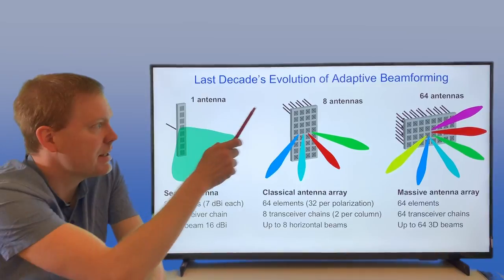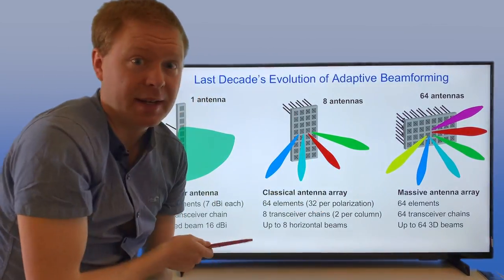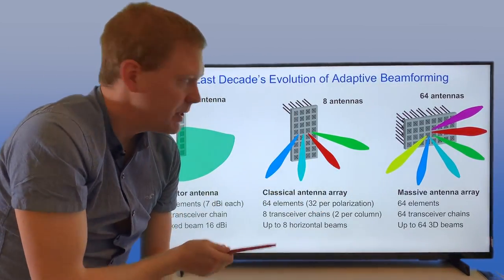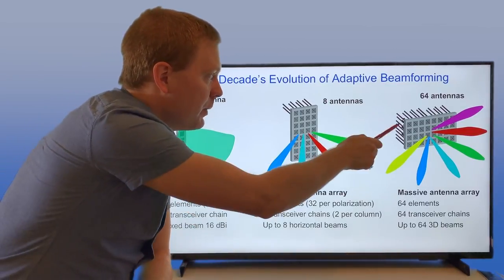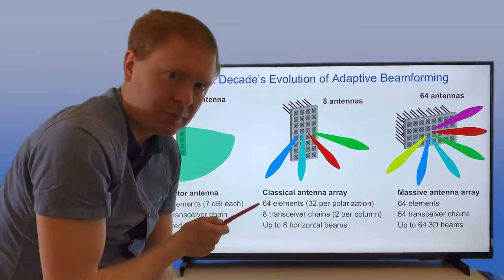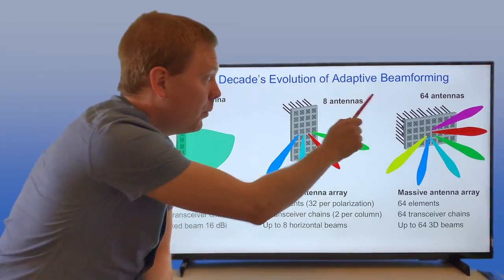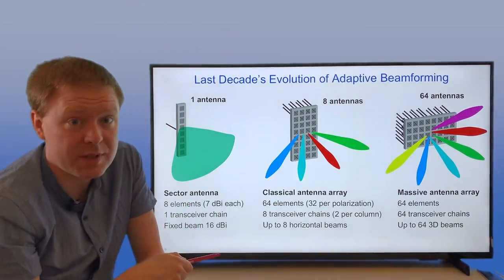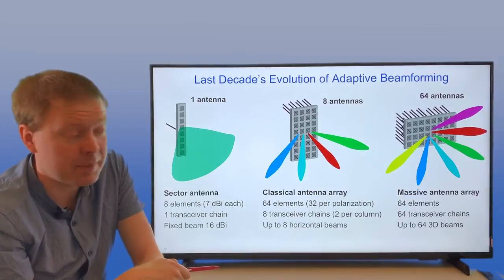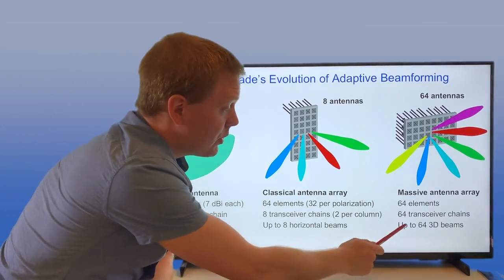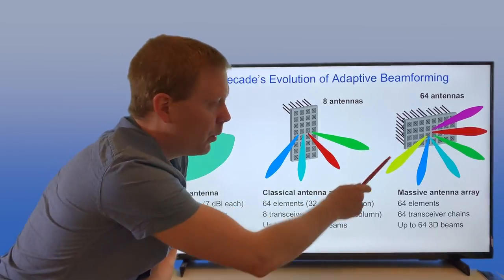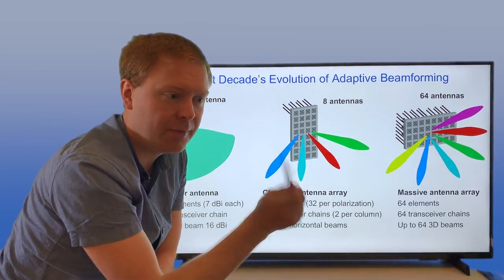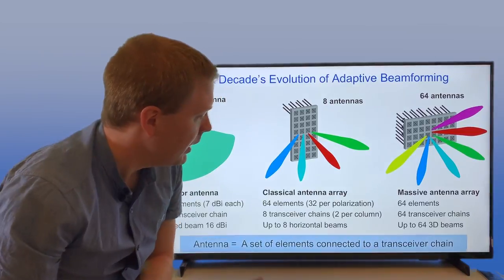More recently, we've gone up to this 64 antenna Massive antenna array. In those cases, we still have the same number of radiating elements as in the previous case, but now we can control each of them. That means you need to have more cables going into this box, so you have 64 transceiver chains and 64 radiating elements. In this case, you can form up to 64 orthogonal 3D beams, because you can form them both horizontally and vertically.